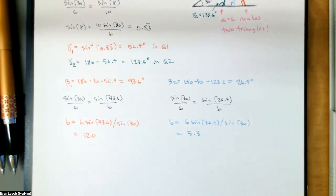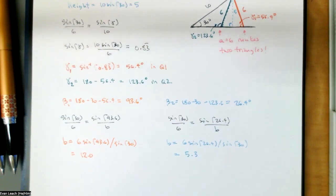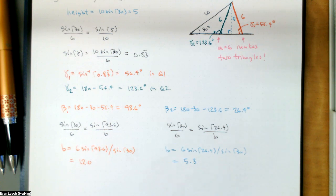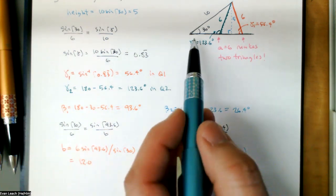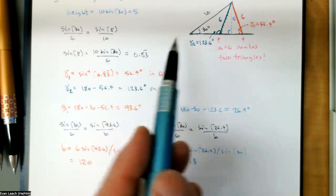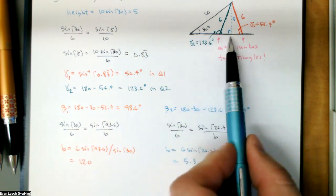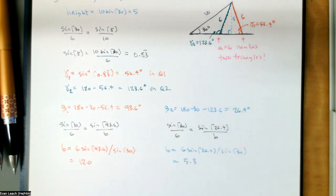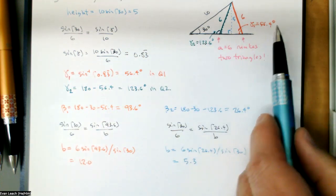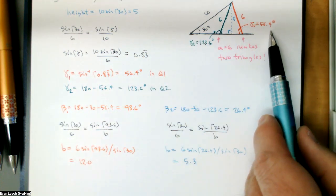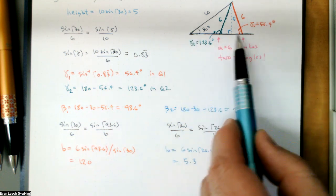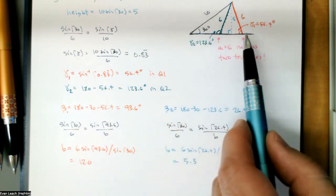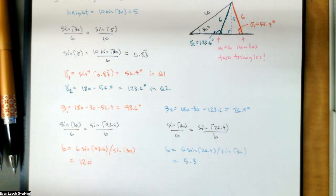With that 123.6-degree angle, we get the short value of B of 5.3. But with the 56.4-degree gamma, we get a very long B of 12.0. So those are our two complete triangle descriptions.